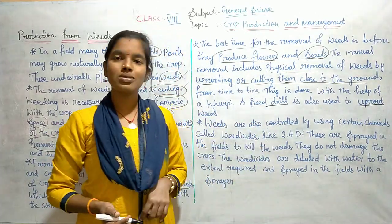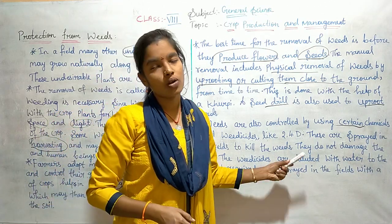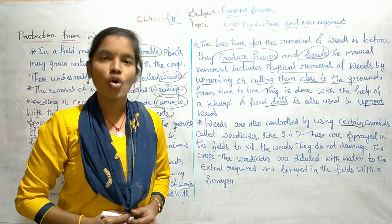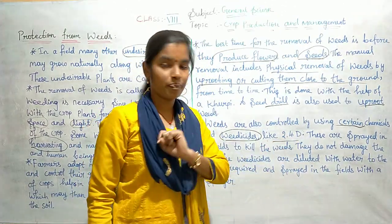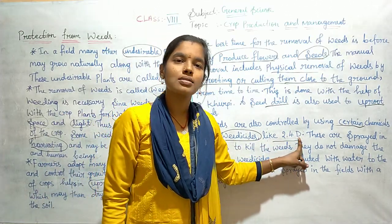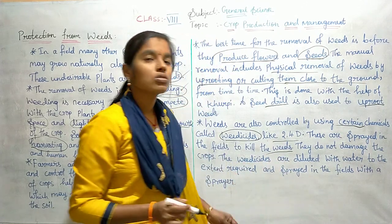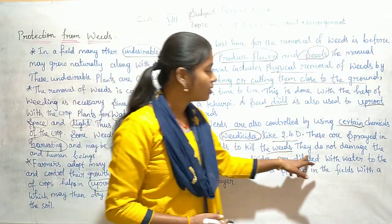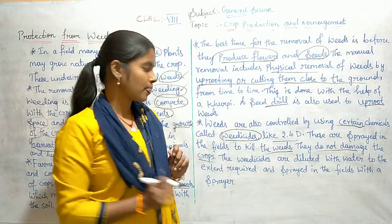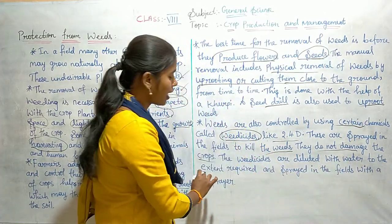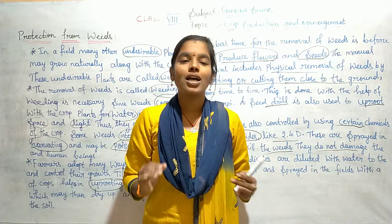Weeds are also controlled by certain chemicals called weedicides. For example, 2,4-D — which stands for dichlorophenoxy acetic acid — is a weedicide. These are sprayed in the fields to kill the weeds. They will damage only weeds and will not damage crops. The weedicides are diluted with water to the required extent and sprayed in the fields with a sprayer.